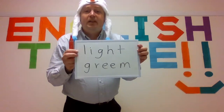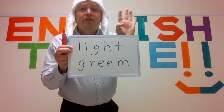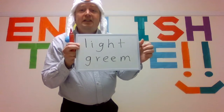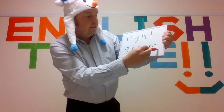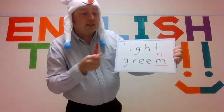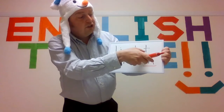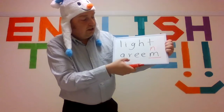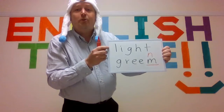The next one — light green. Five seconds: five, four, three, two, one. Did you find the wrong letter? The wrong letter is M. You should have an N. Let's spell light, then green — light green. Very good.